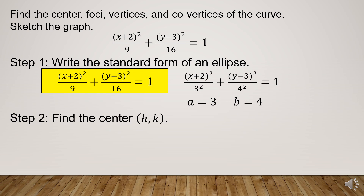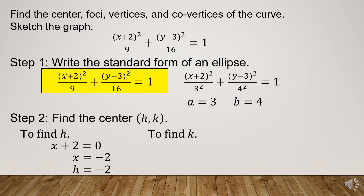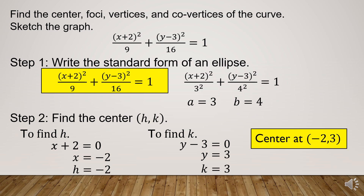Step 2: Find the center with coordinates h and k. To find h, take the expression x plus 2 and equate to 0. Transposing gives x equals negative 2, so h equals negative 2. To find k, take y minus 3 and equate to 0. Transposing gives y equals 3, so k equals 3. Therefore, the center of the ellipse is at (negative 2, 3).